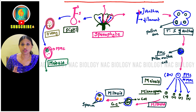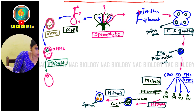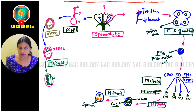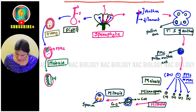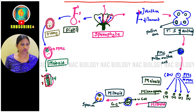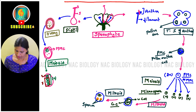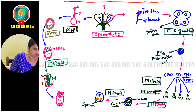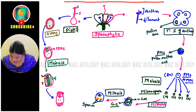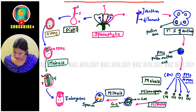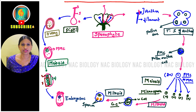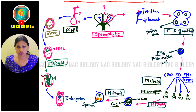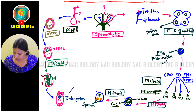The megaspore mother cell undergoes meiosis and produces four megaspores, all haploid (n). Out of these four megaspores, three degenerate and only one — the functional megaspore — remains. From this functional megaspore, mitosis occurs and finally it produces the embryo sac. Inside the embryo sac there is an egg, which is the female gamete.